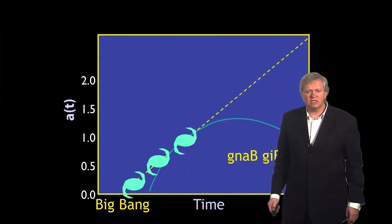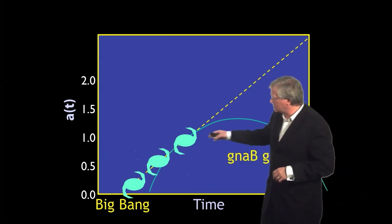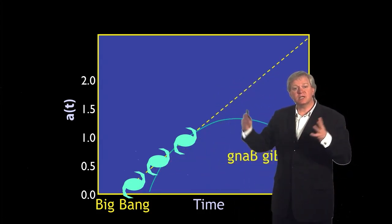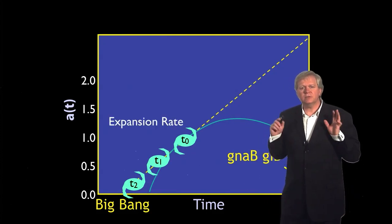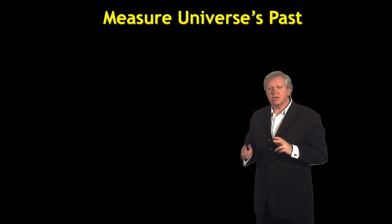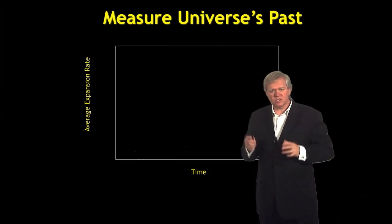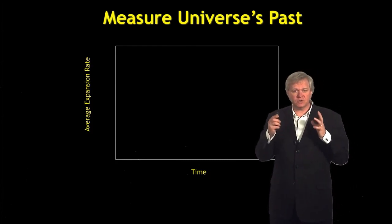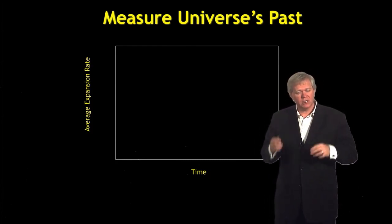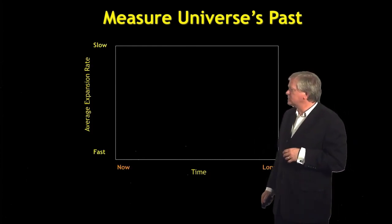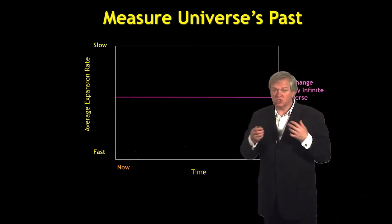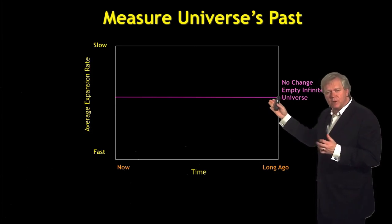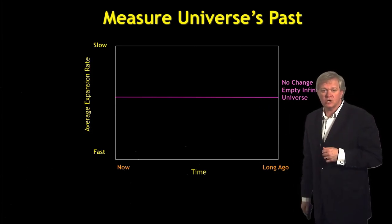You get a slightly different distance and scale factor relation in the past if the universe is going to keep on expanding forever. Another way to think about it is looking through and measuring the universe's past expansion rate. You measure how fast the universe is expanding now, we call that the Hubble constant. If the universe is just coasting, it has almost nothing in it, then the expansion rate, the average expansion rate of the universe, isn't going to change over time.